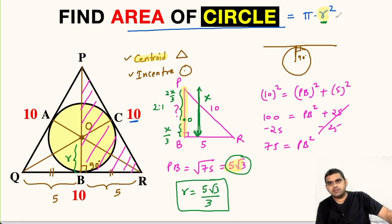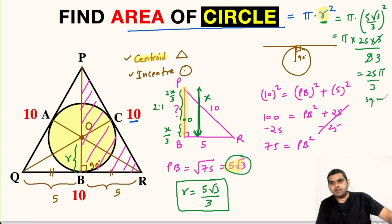Simply we have to substitute its value here. So this will be pi times 5 root 3 divided by 3 whole squared. So this will be pi times 25 times 3 divided by 9. So this will cancel 3 times. So 25 pi upon 3 square units is the area of the circle.